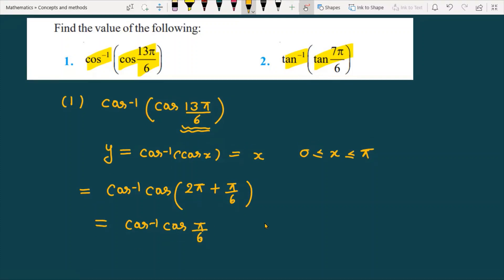Now you can see the angle we are studying, this angle already lies between zero and π. In this case, if the angle lies between zero and π, then directly you can replace it with π by 6.